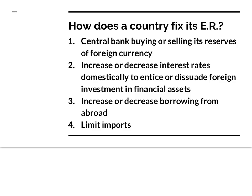Now, how does a country fix its exchange rate? First, the central bank could buy or sell its reserves of foreign currency — the central bank holds the foreign currency in some denomination, maybe $100 million, $1 billion or more, and they simply buy or sell it on the open market to raise or lower the exchange rate. The central bank or government could also increase or decrease interest rates domestically to entice or dissuade foreign investment in financial assets. They could increase or decrease borrowing from abroad, depending on which way they want the exchange rate to move. Or they could place limits on imports through a tariff or a quota, which reduces demand for the foreign currency and helps keep the exchange rate relatively constant.